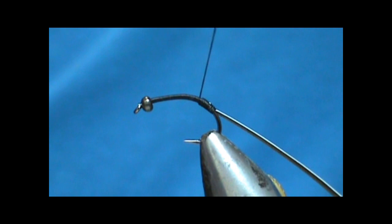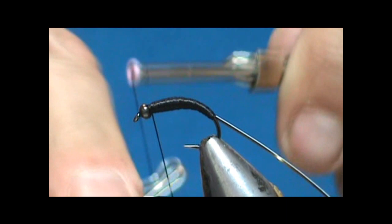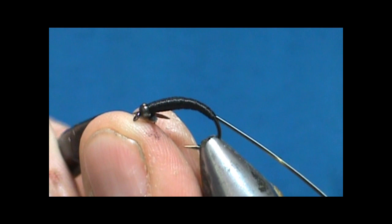I'm going to form the tapered body and now I'm going to tie this off, take my whip finish and whip finish that off. This thread is a little bit too big for doing the finishing touches, but it is good for a speedy tapered body.